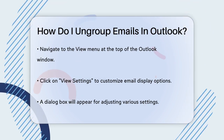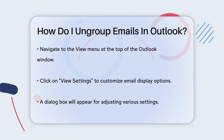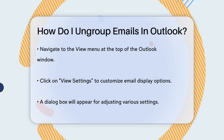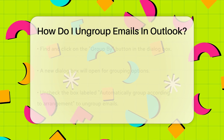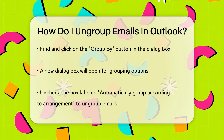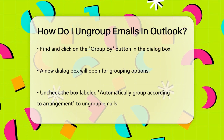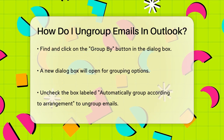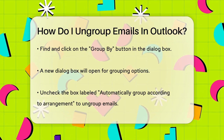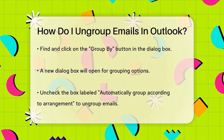Once you're in the View menu, look for the option that says View Settings and click on it. Next, you'll see a dialog box where you can adjust various settings. Here, you need to find the Group By button and click on it. This will open another dialog box where you can make the necessary changes.